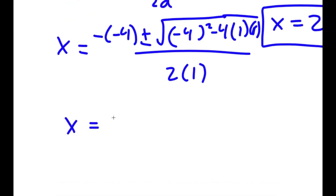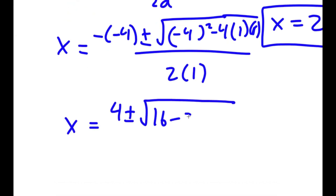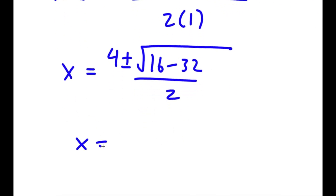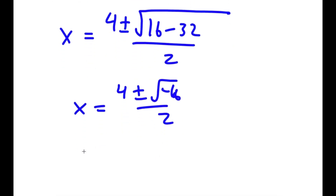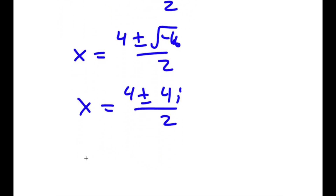This equals 4 plus or minus the square root of 16 minus 32 over 2, which is 4 plus or minus the square root of negative 16 over 2, which is 4 plus or minus 4i over 2, which equals 2 plus or minus 2i.